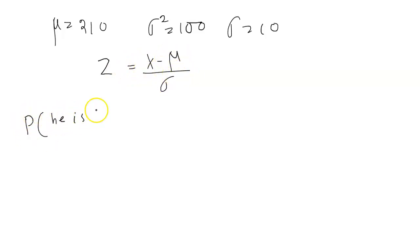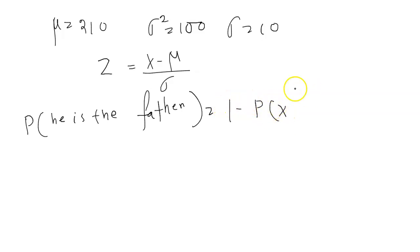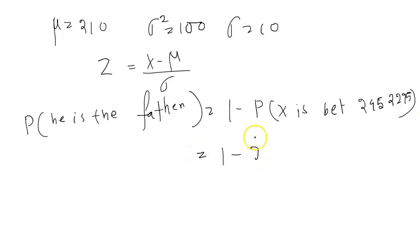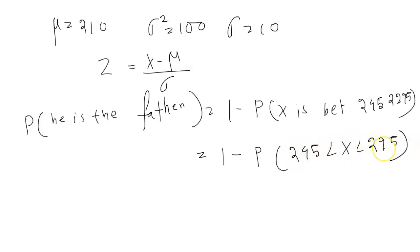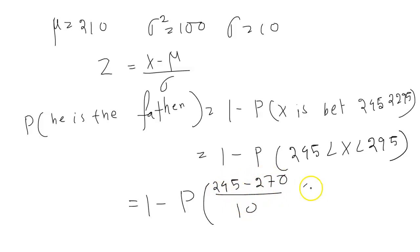So P is equal to 1 minus P, x is 245 to 295. That is equal to 1 minus P, 245 less than x less than 295. Therefore, 1 minus P: 245 minus 270 by 10, less than x minus mu by sigma, less than 295 minus 270 by 10.